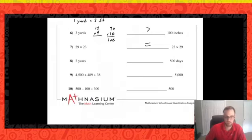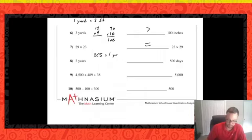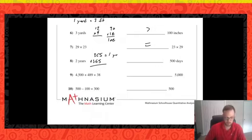Number eight: two years compared to 500 days. There are 365 days in one year, and I have two years — so that's 365 doubled. We can tell already that 365 doubled is greater than 500, because half of 500 is 250 and 365 is already greater than 250.